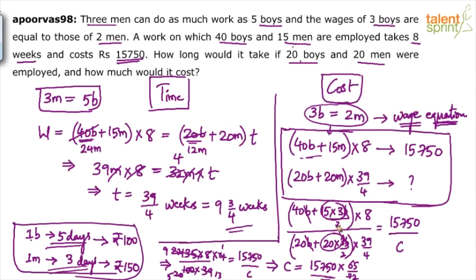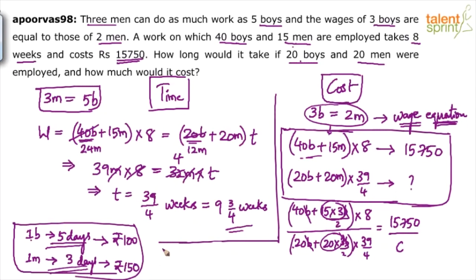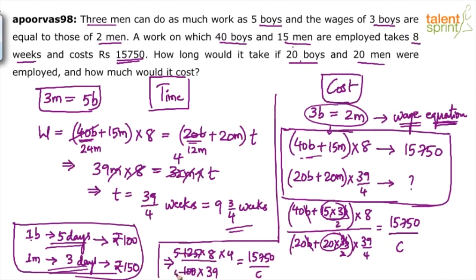Someone pointed out a mistake — 80 plus 45 is 125, not 135. Let me rework: 80 plus 45 is 125, times 8, divided by 40 plus 60 which is 100, times 39 divided by 4, equals 15,750 divided by C. Now it's easy: 4 and 4 get cancelled, giving 125 times 8 over 100 times 39, which simplifies to give C equals 15,750 times 39/40. The answer will be slightly less than 15,750. You can do the complete calculation and check it yourself.